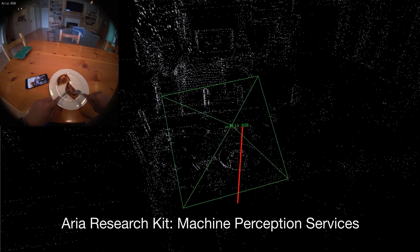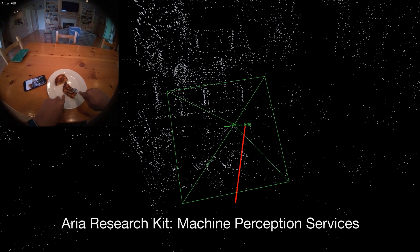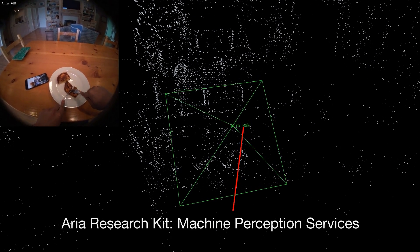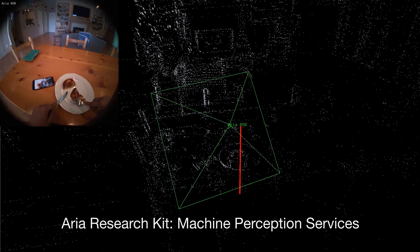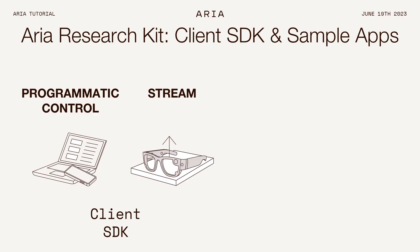Additionally, we're working on more machine perception capabilities to offer via our service, including multi-sequence trajectory, eye gaze reprojection, and a few more that we'll be announcing in the future. Jacob is going to be going into a lot more detail on this later. The third pillar of the ARIA Research Kit is the client SDK, and this is important in that it enables real-time research and the development of real-time experiences.